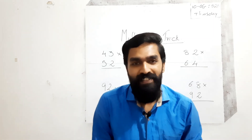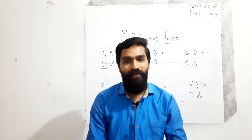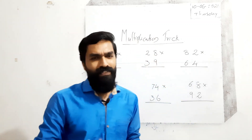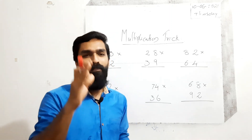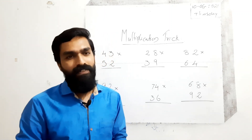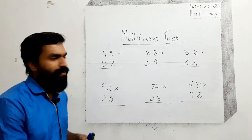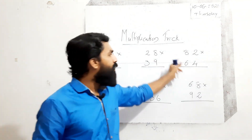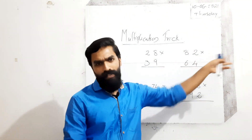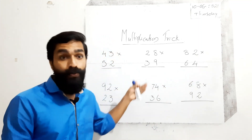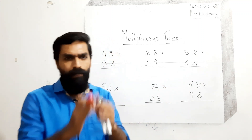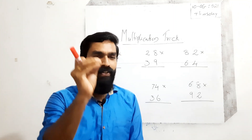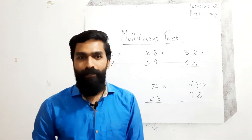Hi everyone, you are watching the Ganayandra program on my YouTube channel Infinity Minus Infinity. Today I am going to discuss a shortcut method to find the product of any two two-digit numbers. I have already written some numbers: 43 into 52, 28 into 39, 82 into 64, and some others. Using this method you can find the answers very easily.